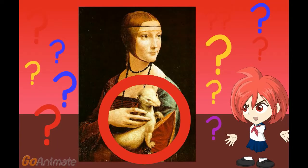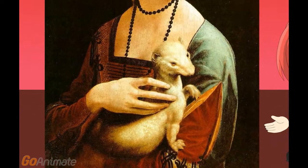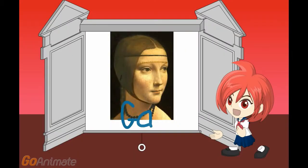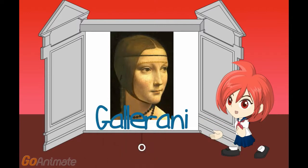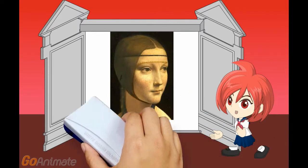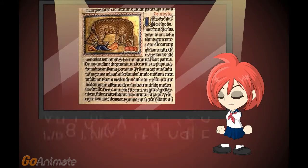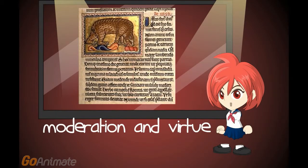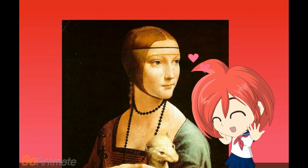But why is this woman painted with an ermine? Because this little pet was the symbol of the duke's association and group. Furthermore, in the Greek language, the ermine was called Gali, a name similar to the last name of Cecilia, a very influential lady as per her role. Then again, in the bestiary books of that time, the ermine was the symbol of moderation and virtue.